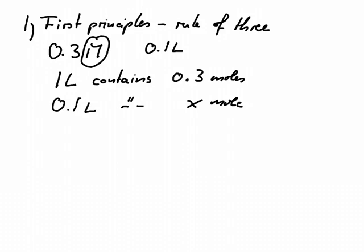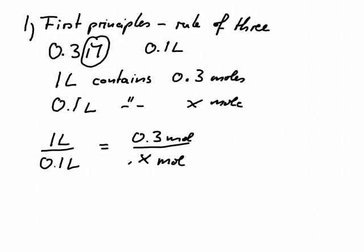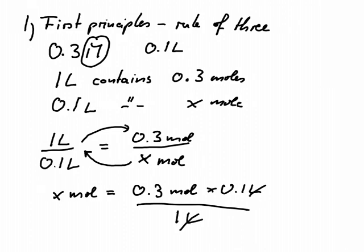So we can set up this set of ratios. We can say one liter divided by 0.1 liter is the same as 0.3 mole divided by x mole. And we can do a little bit of rearranging. We bring the x to that side, we bring all the other things to the other side, and we would get x mole equals 0.3 mole times 0.1 liter divided by 1 liter. The liters cancel out. And we therefore would get 0.3 mole times 0.1. And that gives us 0.03 mole. So we would get 0.03 mole if we had 0.1 liter of this concentration.